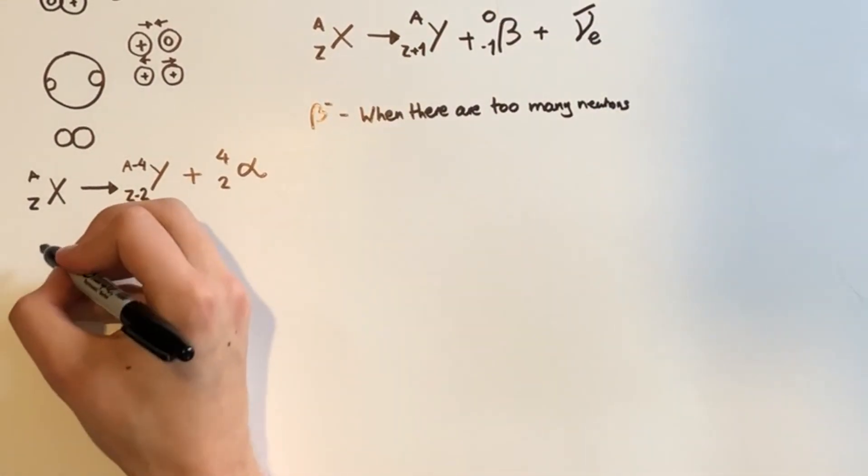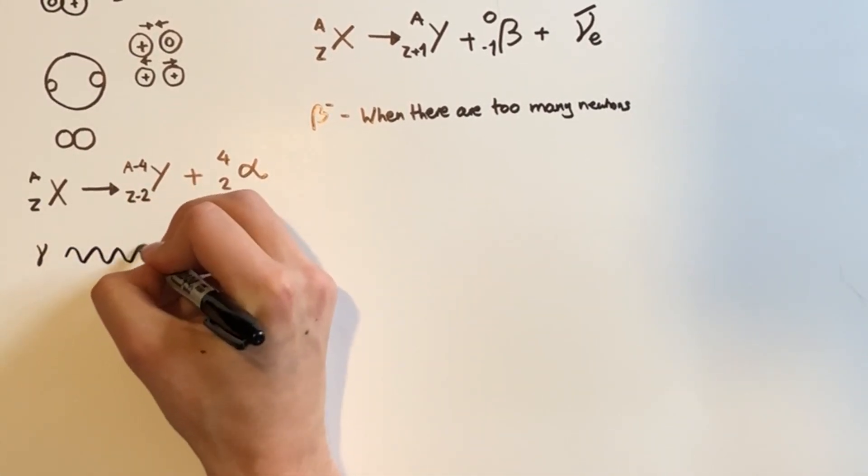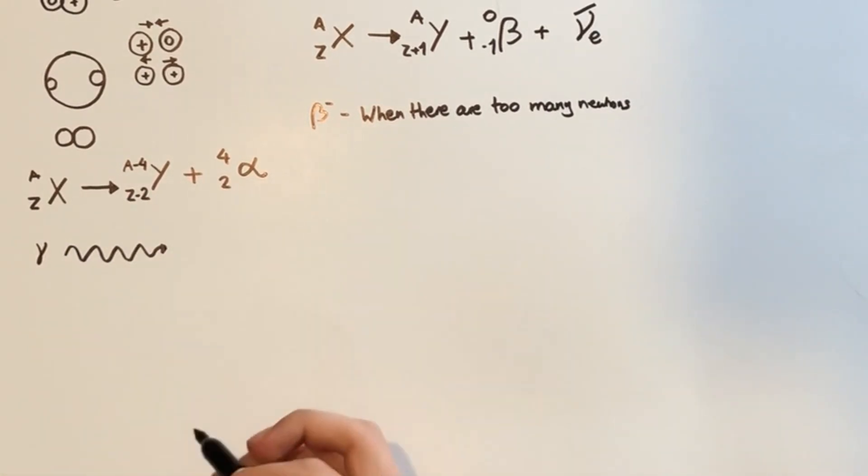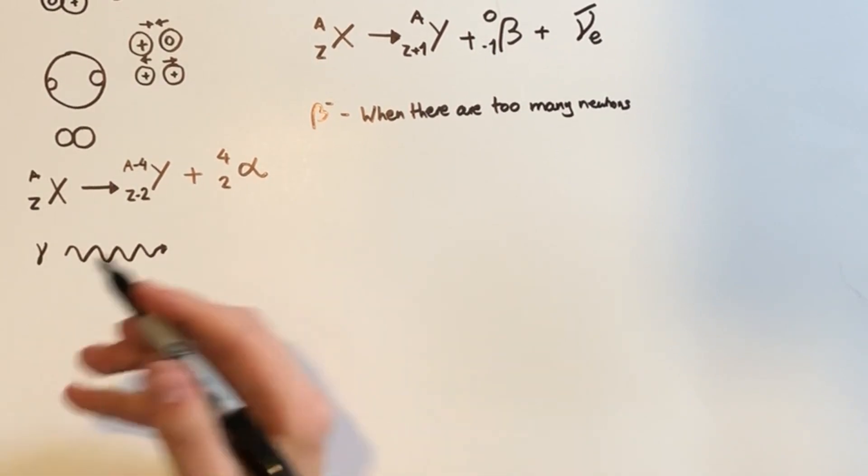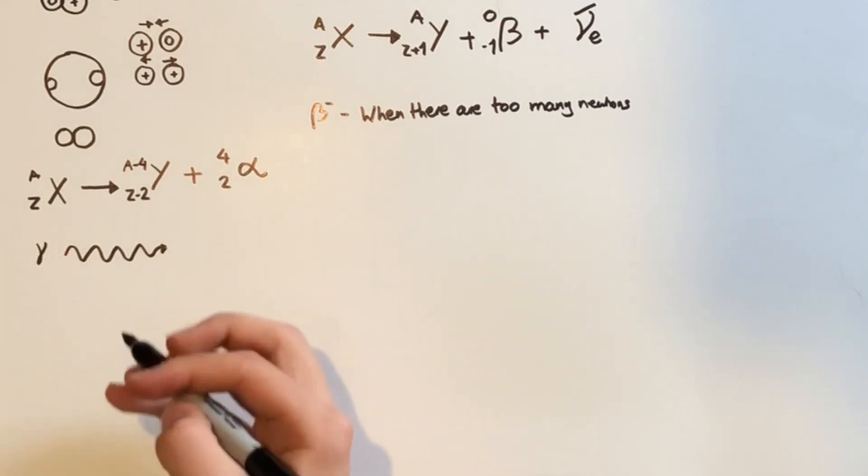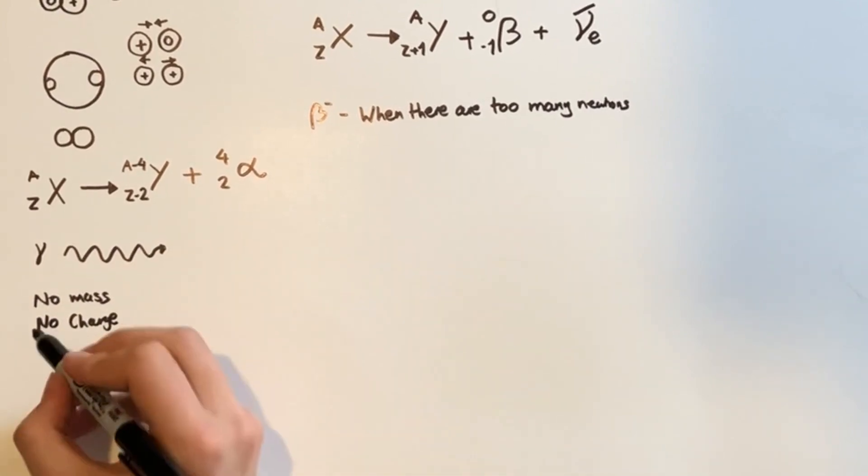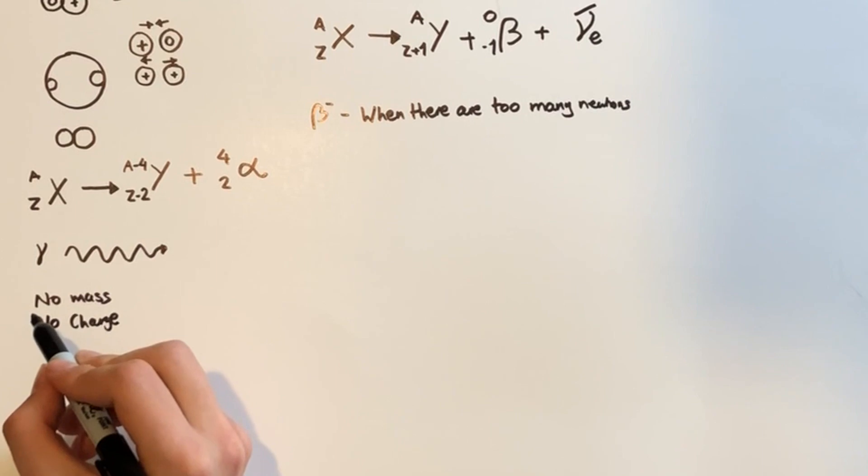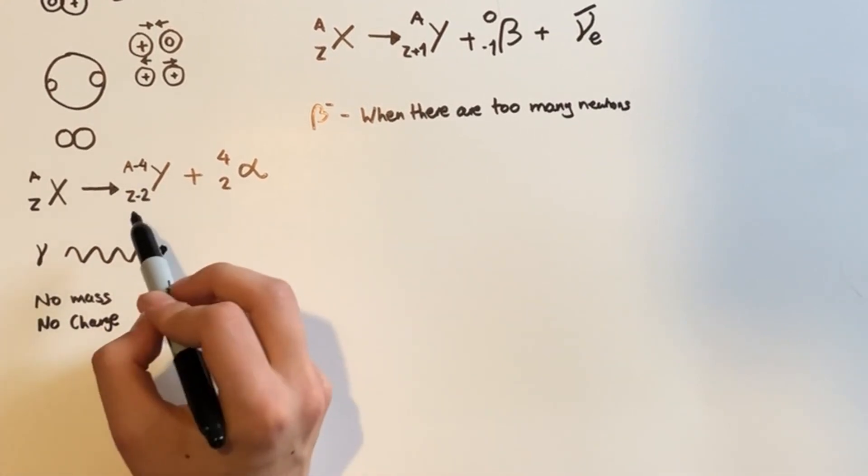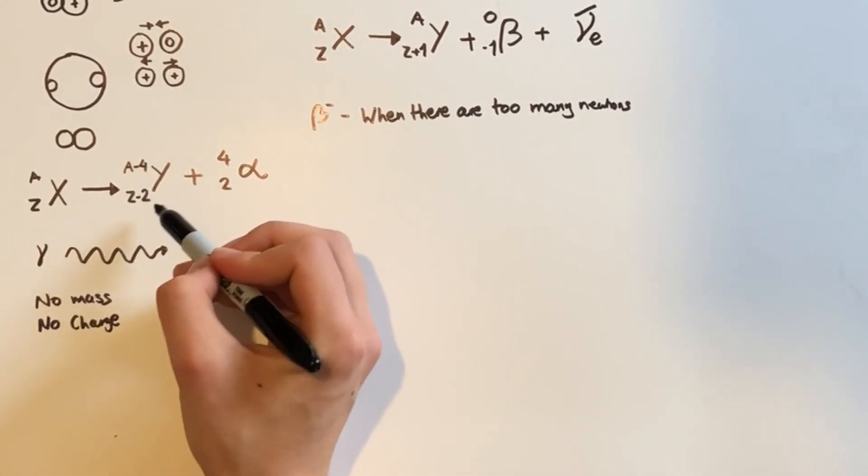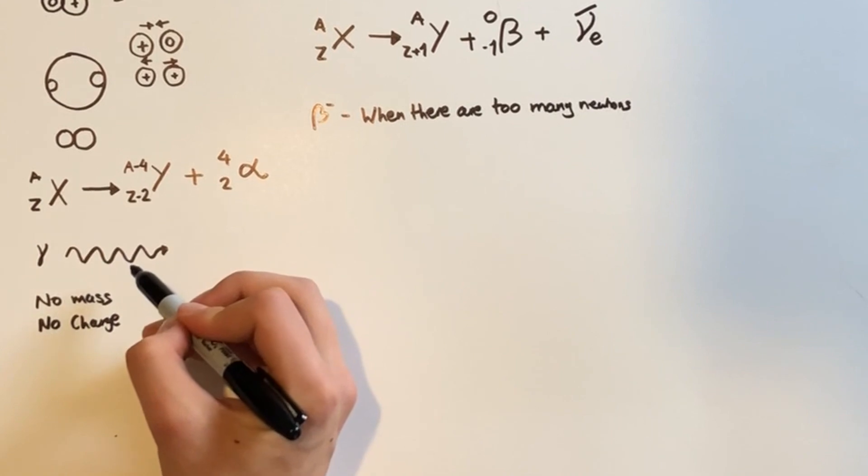And finally, we're going to have a look at gamma radiation. Gamma radiation is just electromagnetic radiation that's emitted by an unstable nucleus. Now gamma radiation is by far the most penetrating. It can actually pass through thick metal plates unlike the other two. But since it's just radiation, it doesn't actually have any mass or any charge. And you normally get gamma radiation just after alpha or beta emissions. This nucleus normally has a lot of energy. So how's it going to get rid of that energy? It's going to get rid of it in the form of electromagnetic radiation.